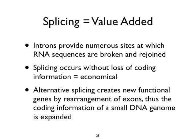Splicing is value added. Virus genomes conserve genetic information, and here transcripts also conserve genetic information because depending upon where they're spliced, you get a different protein. Splicing occurs without loss of coding information — it's very economical. You can splice at different sites within the same transcript and generate multiple RNAs that change the coded product. Alternative splicing — the use of different acceptors and donors — creates new functional genes by rearrangement of exons and thus expands the coding information of a small virus genome.